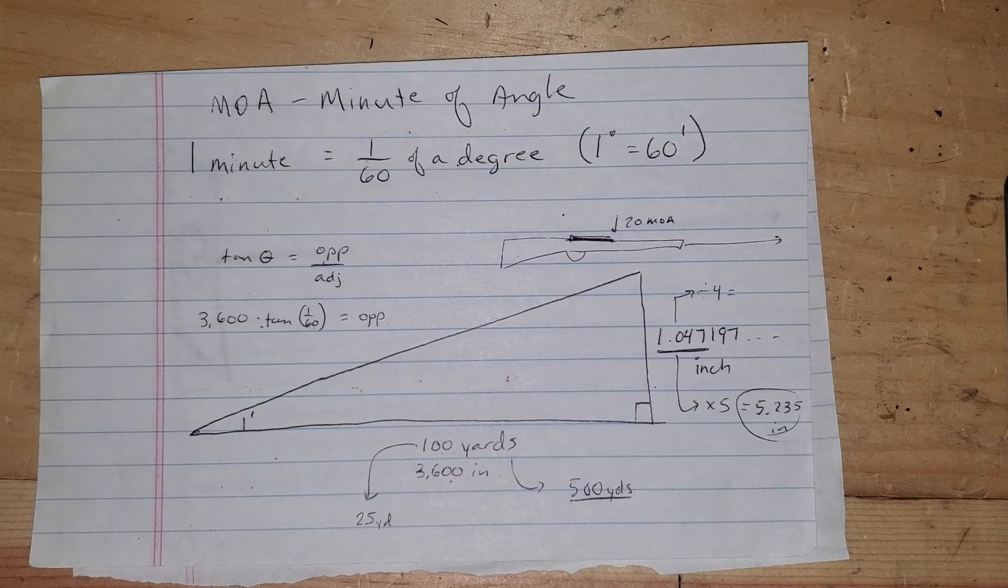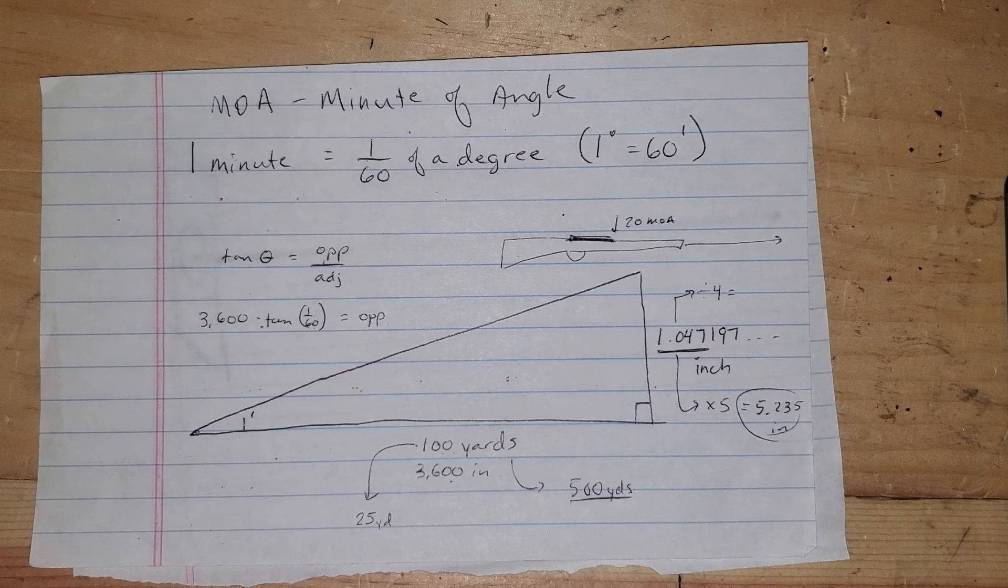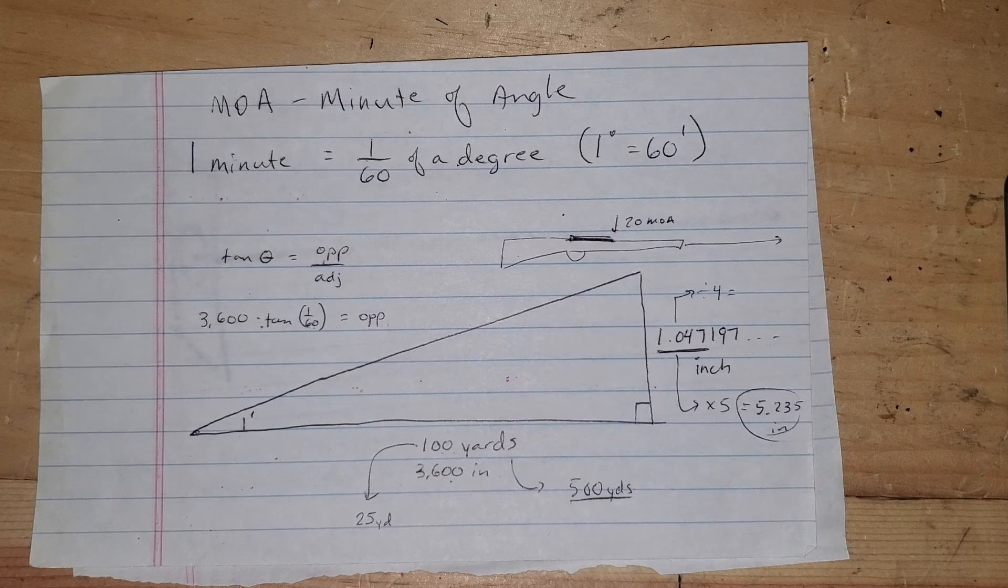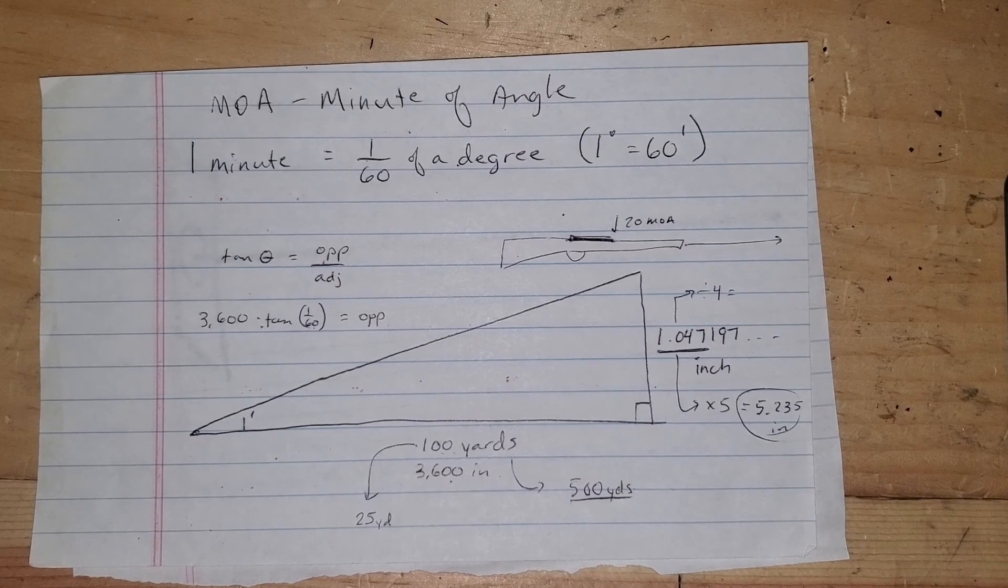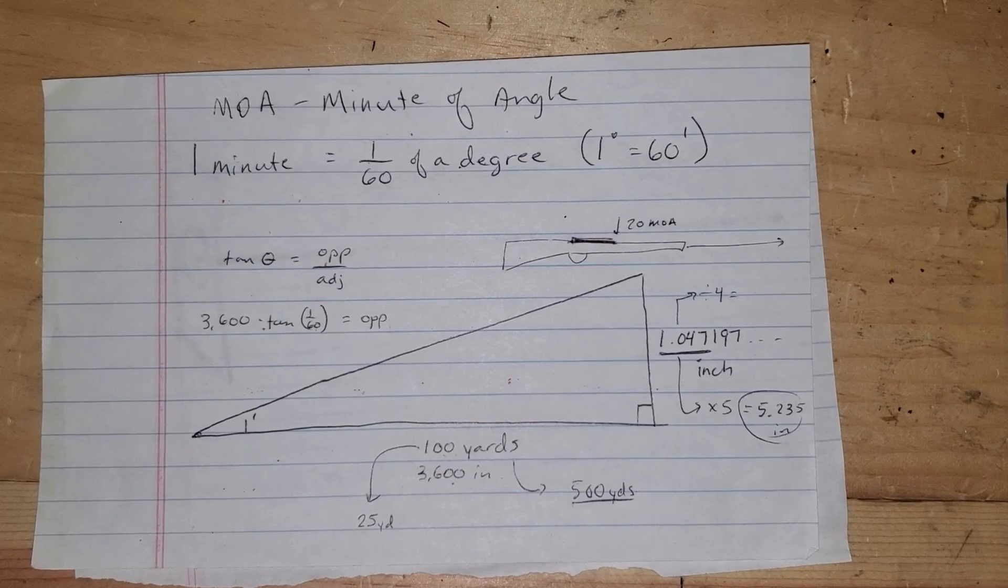So unless you're trying to shoot a thousand yards or more, a 0 MOA rail will work. Well, I say that. I'm going to go with 500. It's kind of the conventional wisdom, but if you're like me and you're a hunter and your shots are 100, 150, 200 yards, a 0 MOA rail will work for you. No problem.